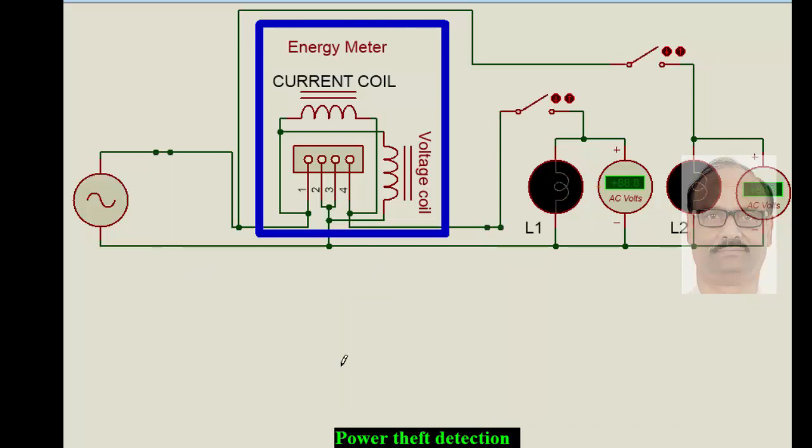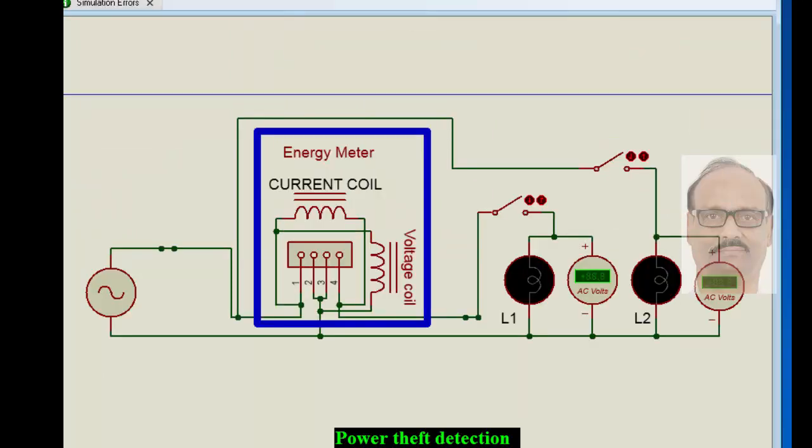We have a voltage coil here as far as the energy meter is concerned, and the current coil - the typical arrangement inside the energy meter is like this. We have a supply source which is connected to the input, and then it passes through the current coil and goes to the load.